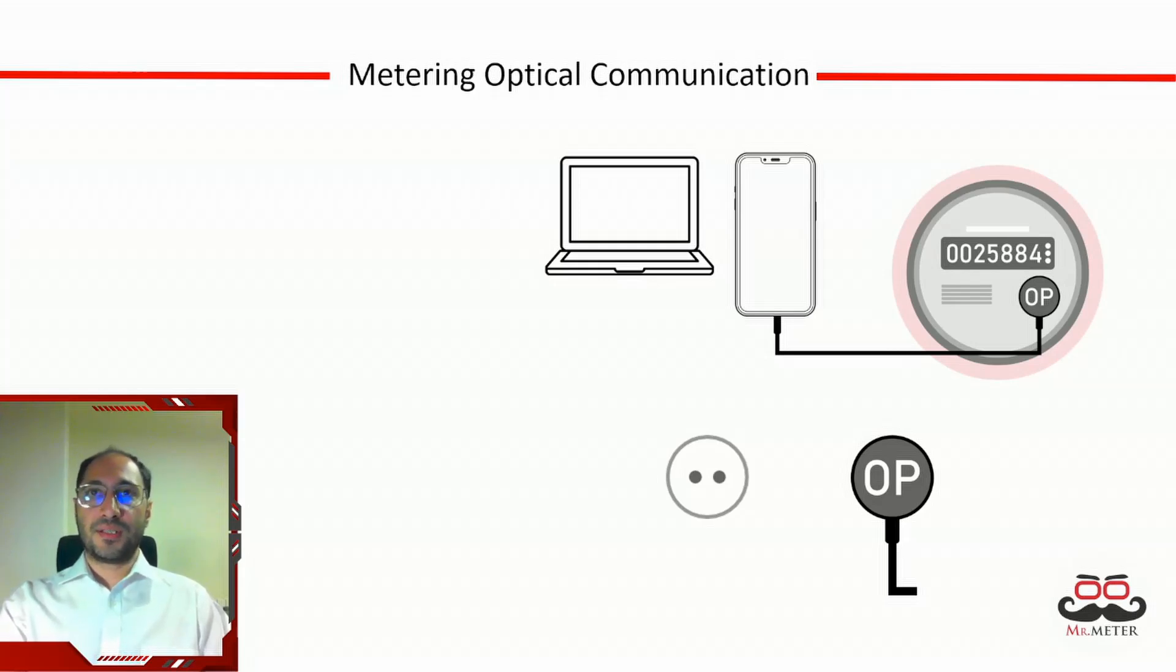The optical probes or optical heads must be used by a handheld device or a laptop because they normally are only transparent devices translating optical to digital signals. There are normally two communication methods between handheld units and the optical probes: wired and wireless connections. Most of the probes are wired and have various output connectors like USB-A or USB-C.